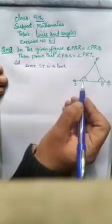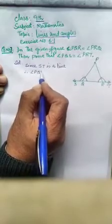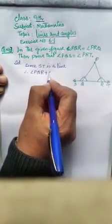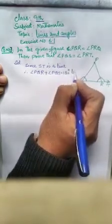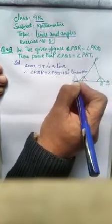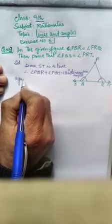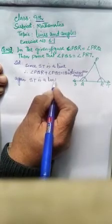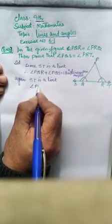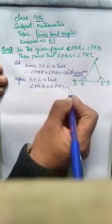Angle PQR plus angle PQS equals 180 degrees as they form a linear pair. Again, ST is a line, therefore angle PRQ plus angle PRT equals 180 degrees, also a linear pair.